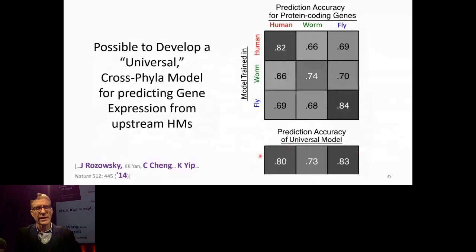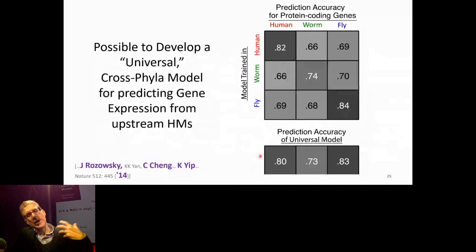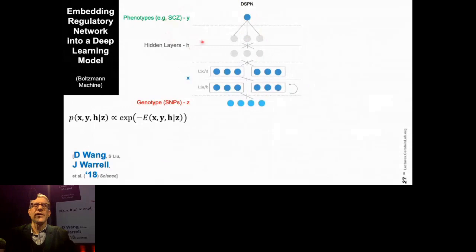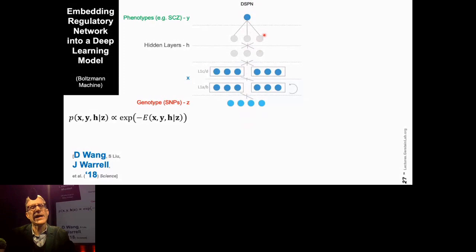We got into neurogenomics around 2015, looking at the brain. Here we got into modeling not so much the output of a gene, but the overall traits of organisms — trying to make models predicting schizophrenia or various neuropsychiatric diseases from looking at the genotype. Jonathan Worrell, a great scientist in the lab, started making deep learning models. One of the really cool things was we were actually able to embed the connectivity from the regulatory network at the bottom of the deep learning model.